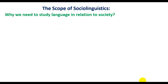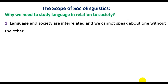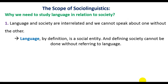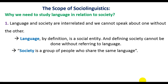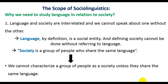A question we may all ask is: why do we need to study language in relation to society? The first answer is that language and society are interrelated and we cannot speak about one without the other. Language by definition is a social entity, and defining society cannot be done without referring to language. Society is a group of people who share the same language — we cannot characterize a group of people as a society unless they share a common language.